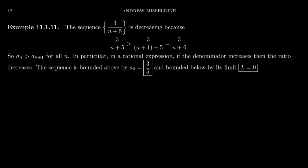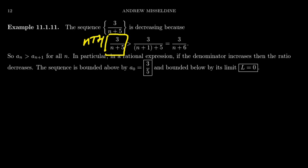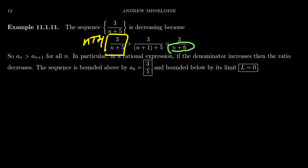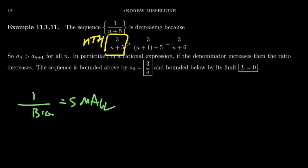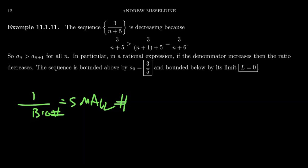Let's look at the sequence 3/(n+5). Is this sequence decreasing? To show this generally, take the nth term 3/(n+5), then look at its successor — the (n+1)th term. Replacing n with n+1, the denominator becomes n+6 while the numerator stays as 3. An important thing to remember about fractions: making the denominator bigger makes the ratio smaller. So going from n+5 to n+6, the numerator stayed the same but the denominator got bigger, making the whole thing smaller. This is evidence that the sequence is decreasing, since the (n+1)th term is less than the nth term.